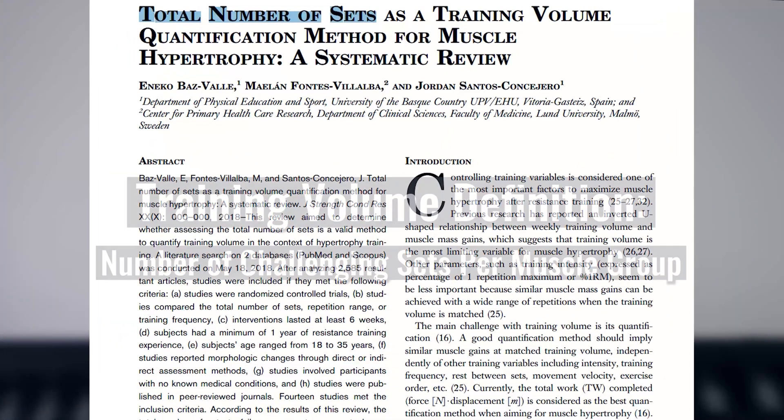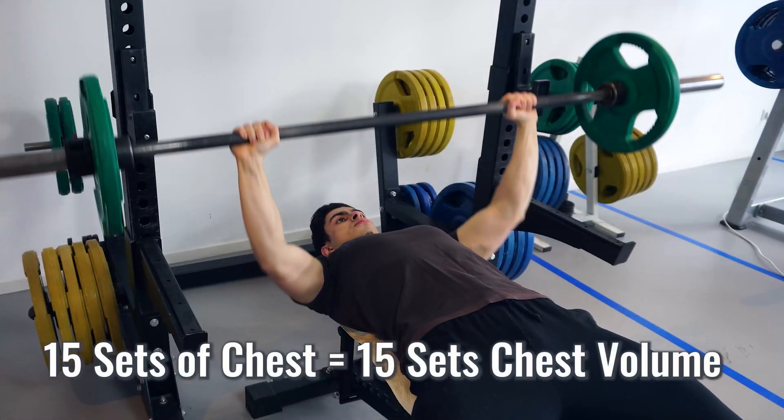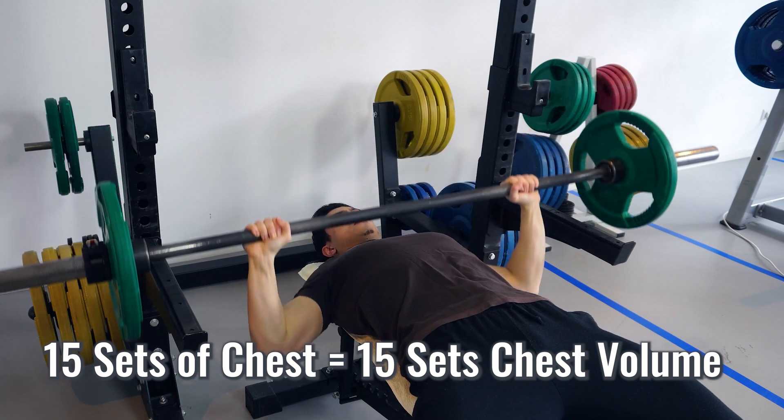First, let's start with training volume. Based on Bass, Val, and others, a simple definition of training volume is the total number of challenging sets per muscle group. So if you train your chest with 15 working sets per week, your chest has a training volume of 15 sets. Up to a certain point, training volume has a linear relationship with muscle and strength gain. If you do just one set of chest training per week, you will get less progress than if you do 5 sets of chest training per week.